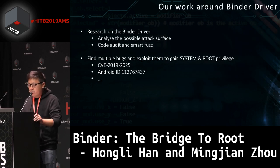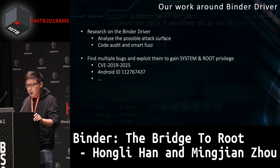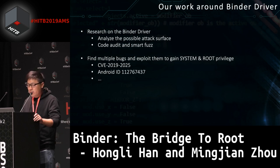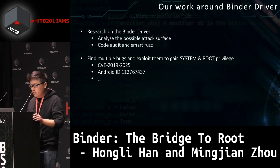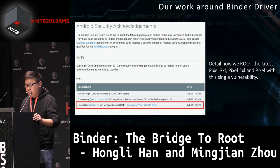Binder was accepted in the mainline kernel in February of 2015. Binder is so important that it is one of the most attractive attack surfaces on Android. We have done some work around the Binder driver — analyzing possible attack surfaces by code auditing and fuzzing. We found bugs like CVE-2025 and other zero-day vulnerabilities, and explored them to gain system and root privilege. With this single vulnerability CVE-2025, we rooted the latest Pixel 3 XL — as far as we know, the first time the Pixel 3 XL has been rooted.